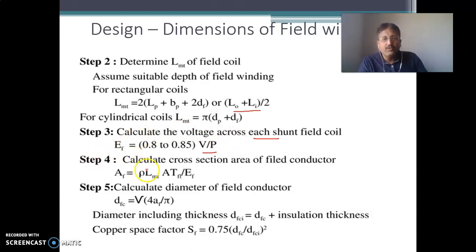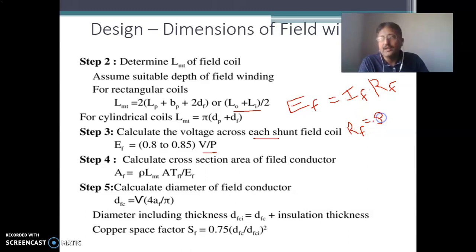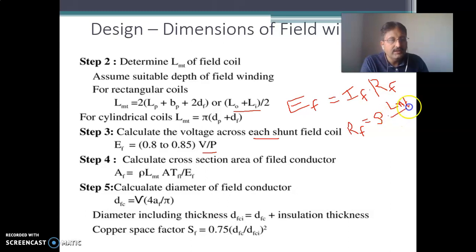Once you get EF (voltage per coil), the next task is to find out the cross section area AF. The equation is: EF = IF × RF, where RF = ρ × LMT / AF (resistivity × length of mean turn / area). Substituting: EF = IF × ρ × LMT / AF. Making AF the subject: AF = ρ × LMT × IF / EF. This gives the equation for the area of the shunt field winding conductor.